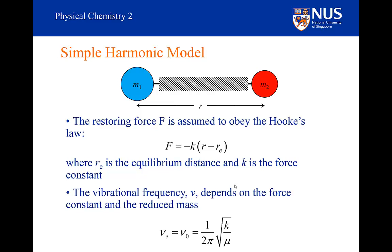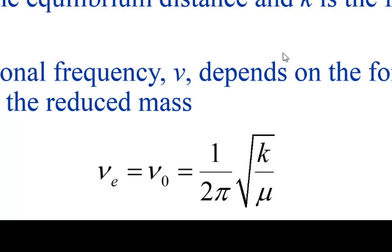It is not too tricky to determine the time dependency of this system, which involves solving a second order differential equation. We can then calculate the vibrational frequency and get this familiar expression: the equilibrium frequency nu sub e is equal to 1 over 2 pi times the square root of the force constant k over mu, the reduced mass.